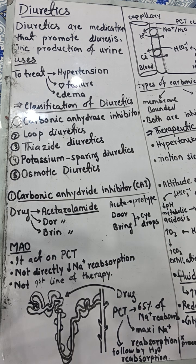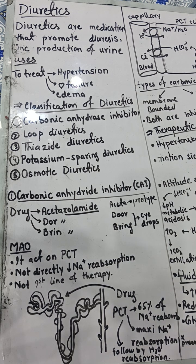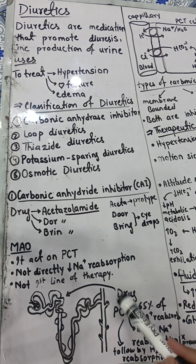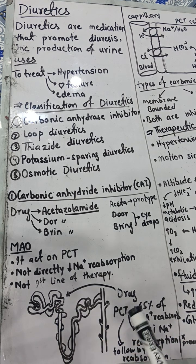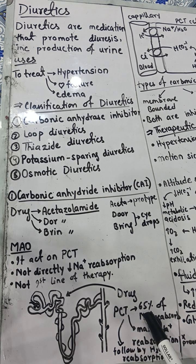Carbonic anhydrase inhibitors unfortunately do not have a long duration of action, so we cannot give them as first-line therapy. The proximal convoluted tubule is the part where 65% of your sodium is reabsorbed, because sodium is one of the most important electrolytes controlling many body functions.